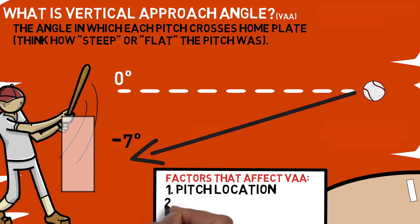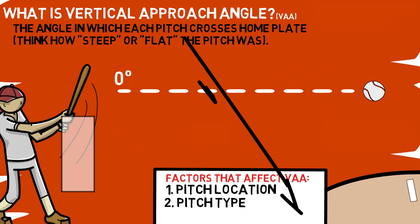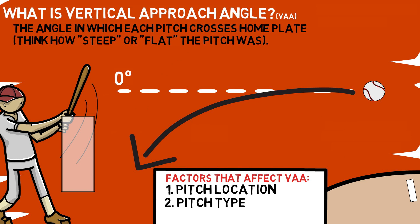But that's only one way that this number can be altered. The second is going to be pitch type. If you were to throw a curveball, which is known for breaking downwards at a much steeper angle than any fastball, how much different this makes our reading — we went from negative four degrees in the first example to negative 15 throwing a breaking ball. Because of this, for the rest of the video, we'll be focusing on how vertical approach angle can be used to improve a pitcher's fastball performance against hitters.